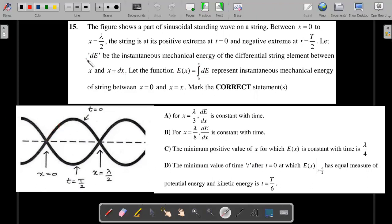Let the function E of x, written as integration of dE from zero to x, represent the instantaneous mechanical energy of the string between x equals zero to x equals x. So dE is the small amount and E is the cumulative amount. With this understanding, mark the correct statements among the four options.